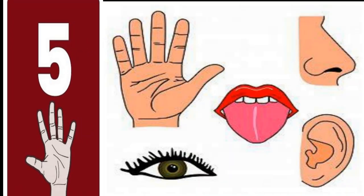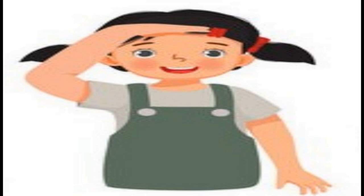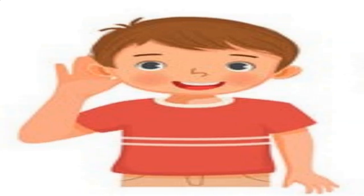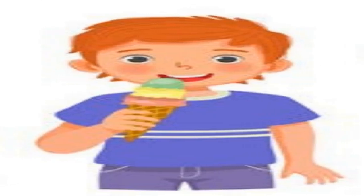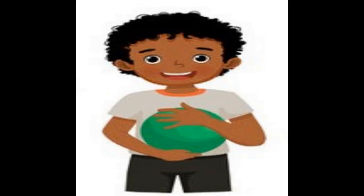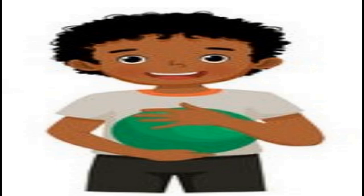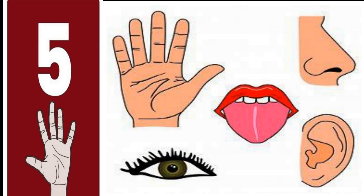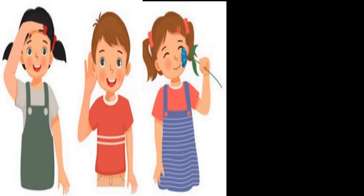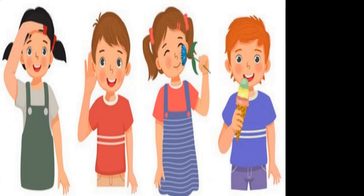5. There are five senses. The five senses are sight with eyes, hearing with ears, smelling with nose, tasting with tongue, and touching with skin. These five are called the five senses. Can you tell the five senses? Sight, hearing, smell, taste, and touch.